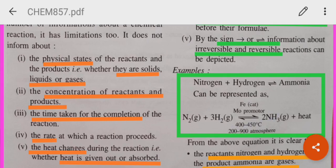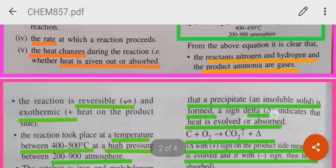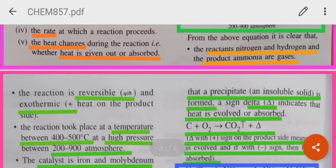So, what do we get? We get ammonia and heat. What do we know from the above equation? The reactants, nitrogen and hydrogen, combine to form the product ammonia as gases. As I said, reversibility sign, exothermic is represented by plus heat.